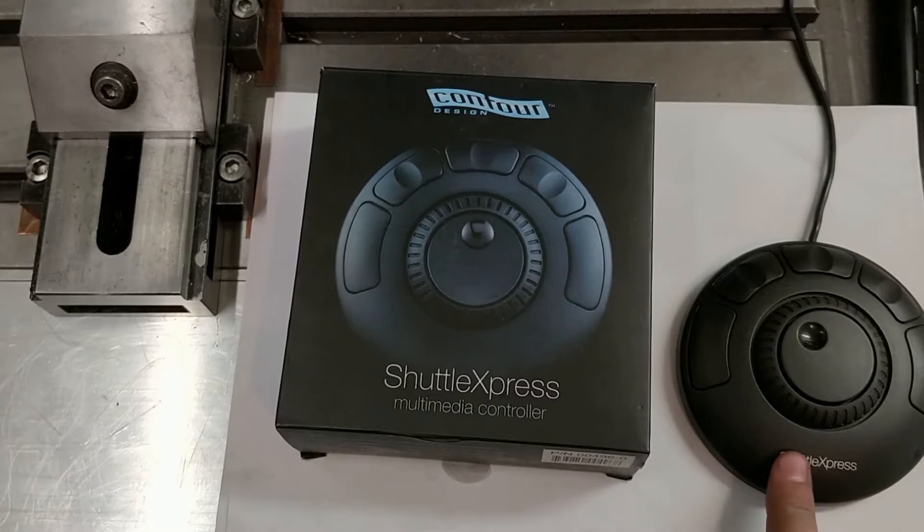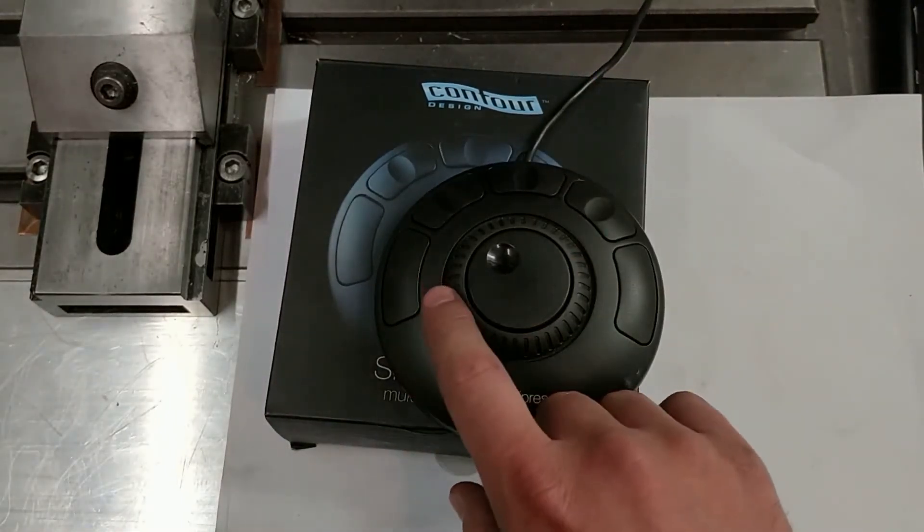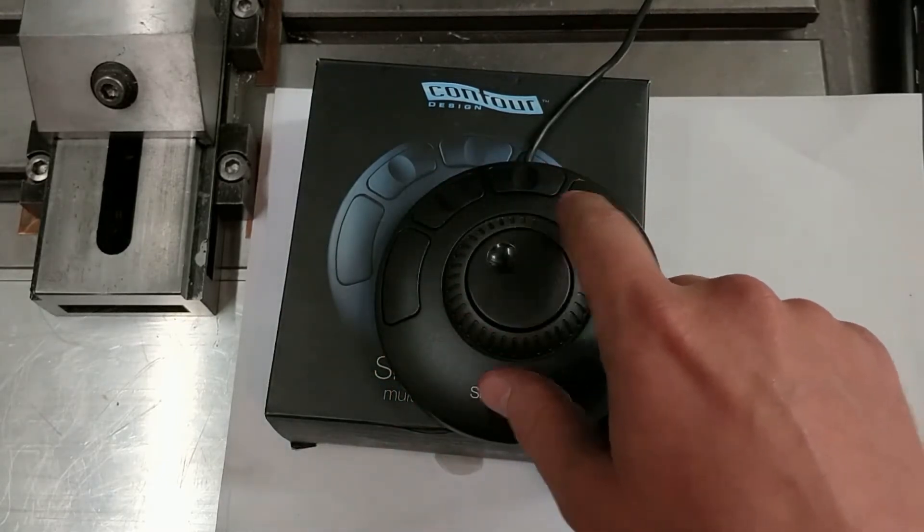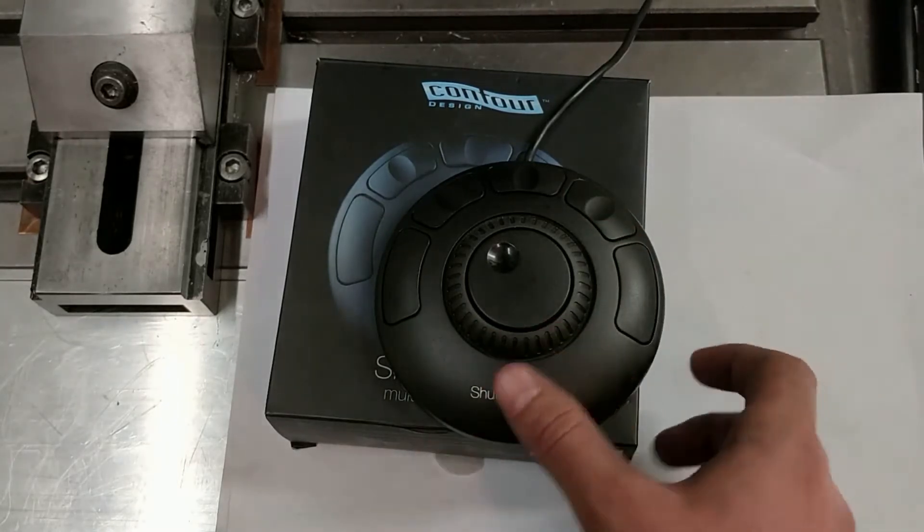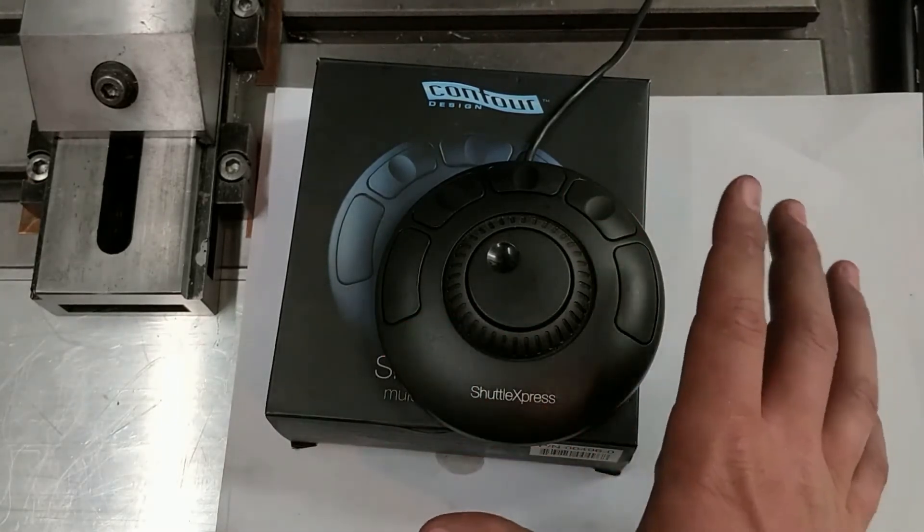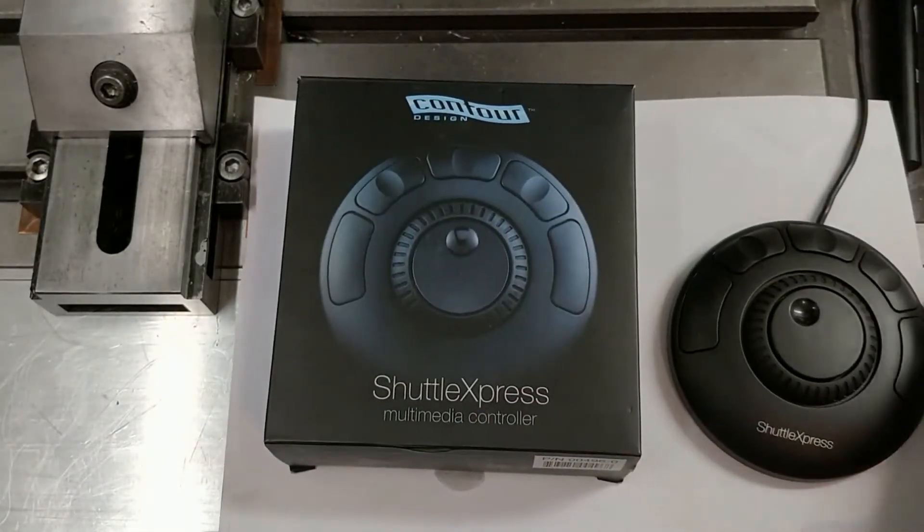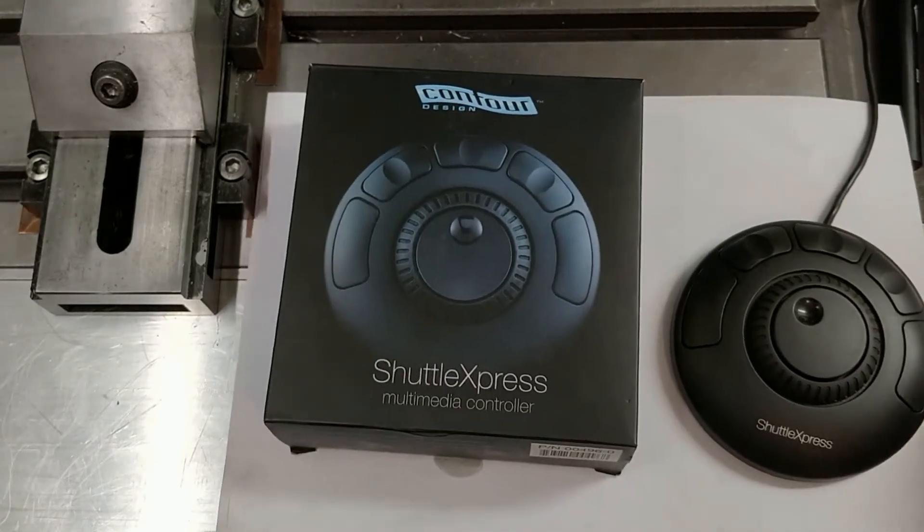The thing they sell is just labeled with Tormach and has the axis labeled on each button. And this button is labeled as step or something like that. But it's basically the same device and Tormach also uses LinuxCNC in their PathPilot controller.